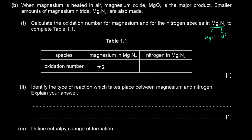Mg has a charge of 2+ and nitrogen has a charge of 3−; that's the nitride ion. So we get Mg₃N₂. The nitrogen has an oxidation number of negative 3.